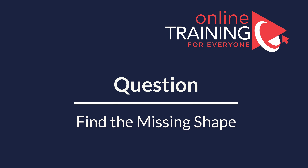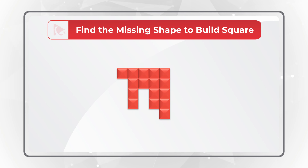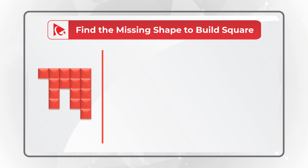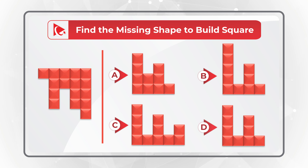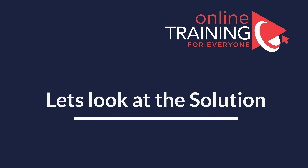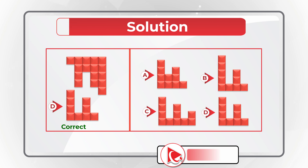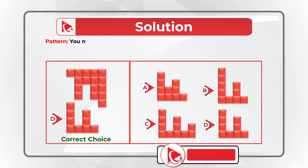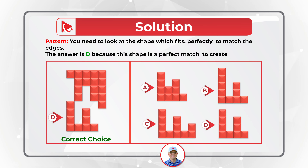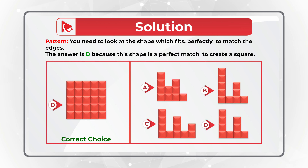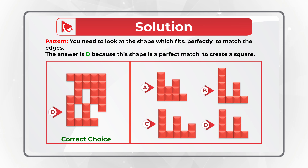Here's a very interesting question to test your spatial reasoning. You are presented with a partial square and you need to find the missing shape to build the full square. You have four choices: A, B, C, and D. The correct choice is choice D. To get to this answer, you need to look at the shape which fits perfectly to match the edges. Since this is a five by five square, choice D is the perfect shape to create a full square. Hopefully you've nailed this and now know how to answer similar problems on the test.